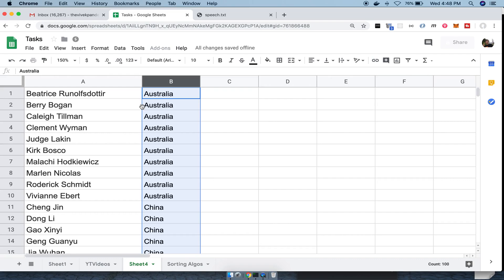Since the list was already sorted by the names first and Excel uses a stable sorting algorithm, all the Australians are now sorted in alphabetical order.